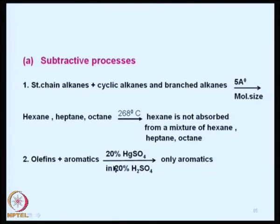We discussed straight-chain alkanes, cyclic alkanes, and branched alkane mixtures. A 5-angstrom molecular sieve can be used for separation. Around 268 degrees centigrade, hexane is not absorbed from a mixture of hexane, heptane, and octane. So if hexane is not absorbed, the hexane will come out while other substances are absorbed. This is an example of reaction chromatography.